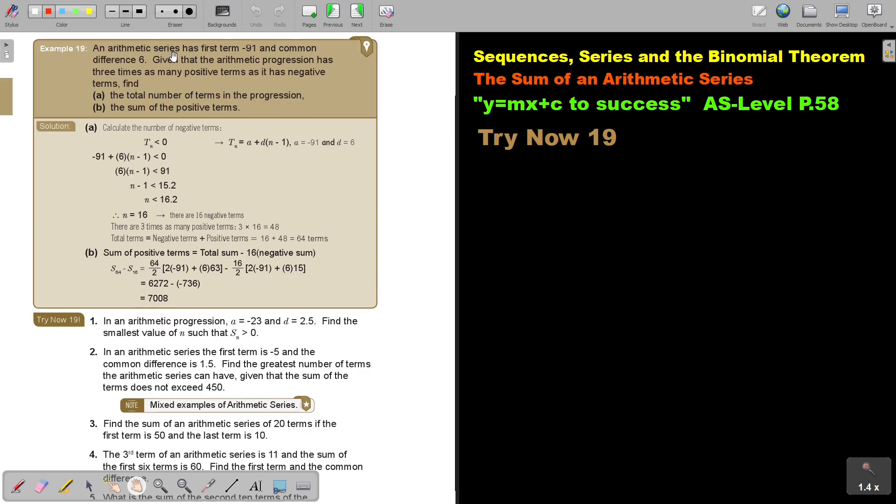An arithmetic series has first term negative 91 and common difference 6. Given that the arithmetic progression has 3 times as many positive terms as it has negative terms, find the total number of terms in the progression.